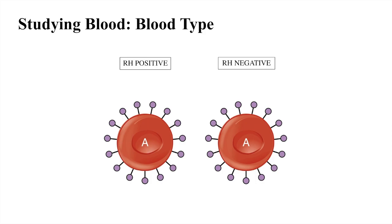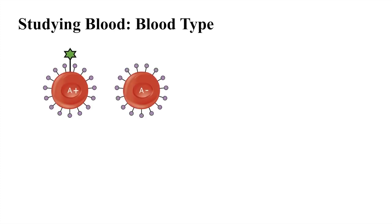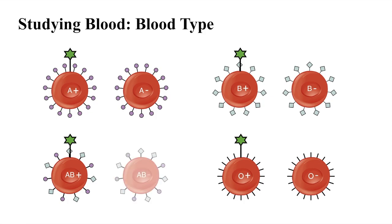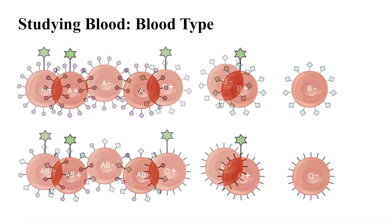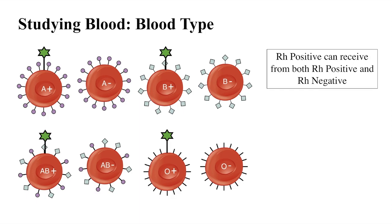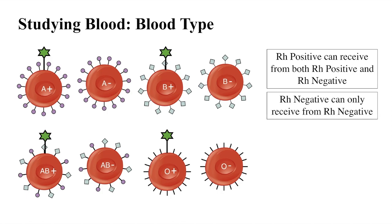In addition to A, B, AB, and O blood types, there's another factor that plays into blood typing. There's a protein called the RH factor. The RH factor can either be present on the red blood cell, creating a positive blood type, or absent, creating a negative blood type. After considering the RH factor, we are presented with the eight most common blood types: A positive, A negative, B positive, B negative, O positive, O negative, AB positive, and AB negative. The RH factor must also be considered during blood transfusions. A person with a positive RH factor is able to receive blood from those with either a positive or negative RH factor. A person with a negative RH factor can only receive blood from someone who also has RH negative blood.